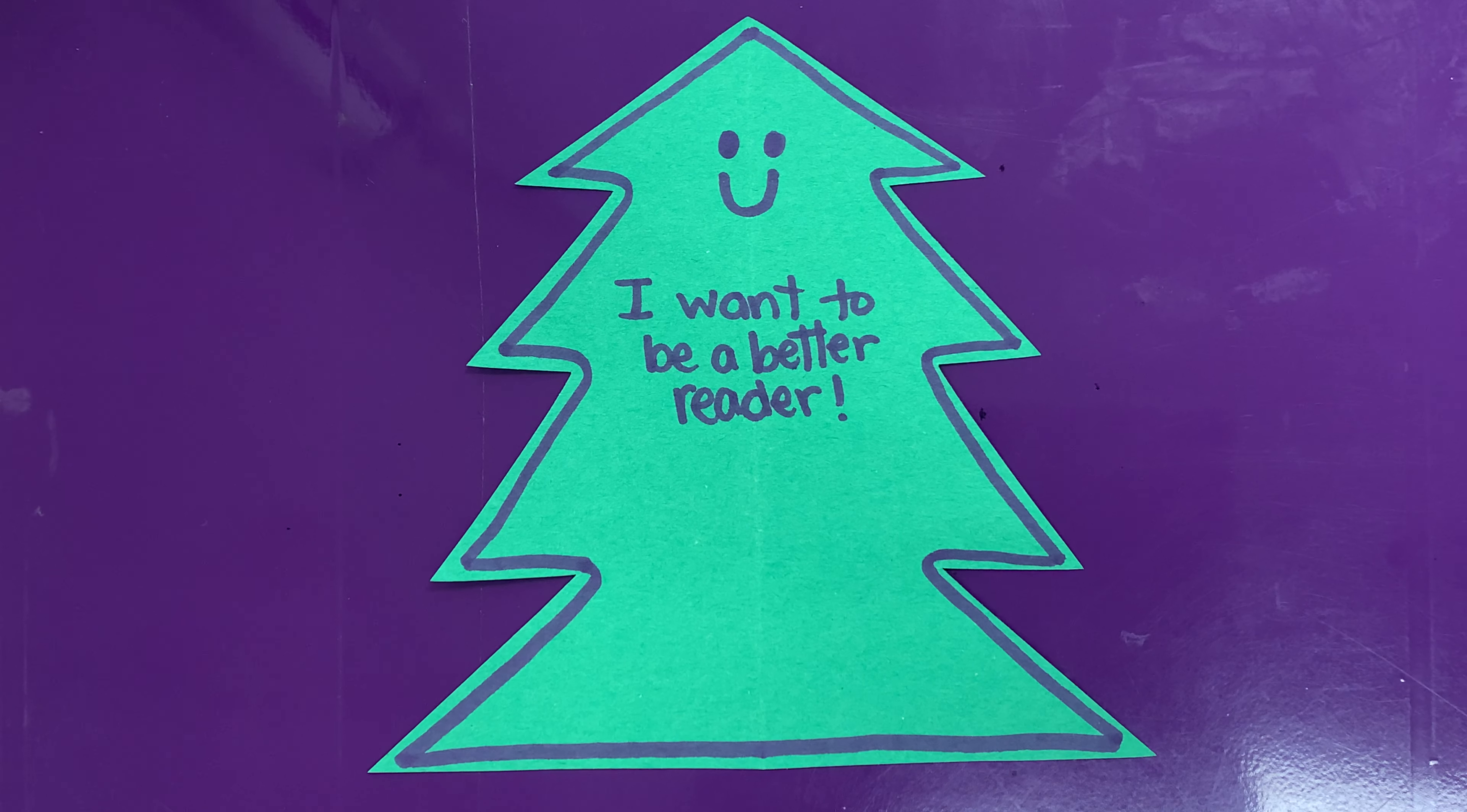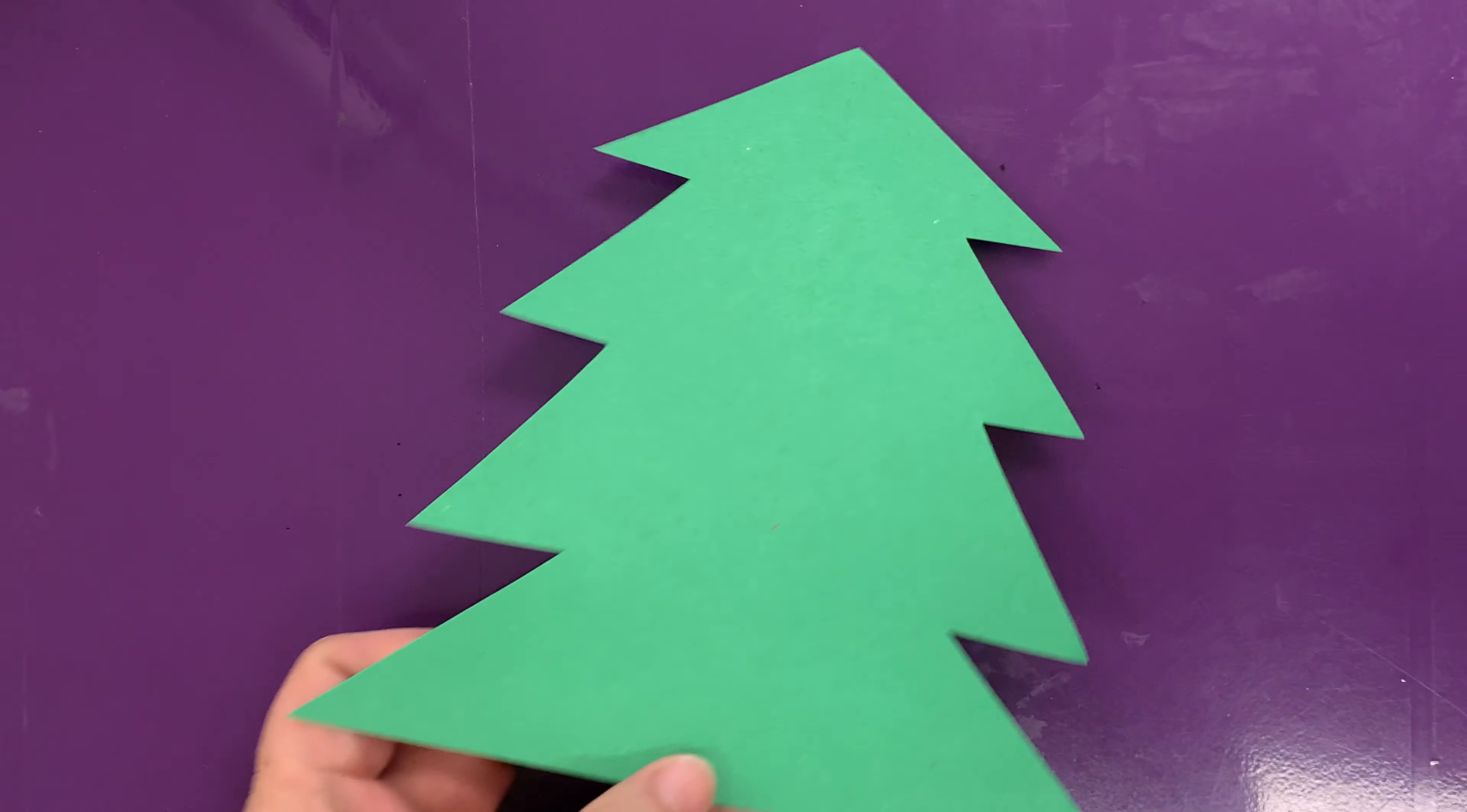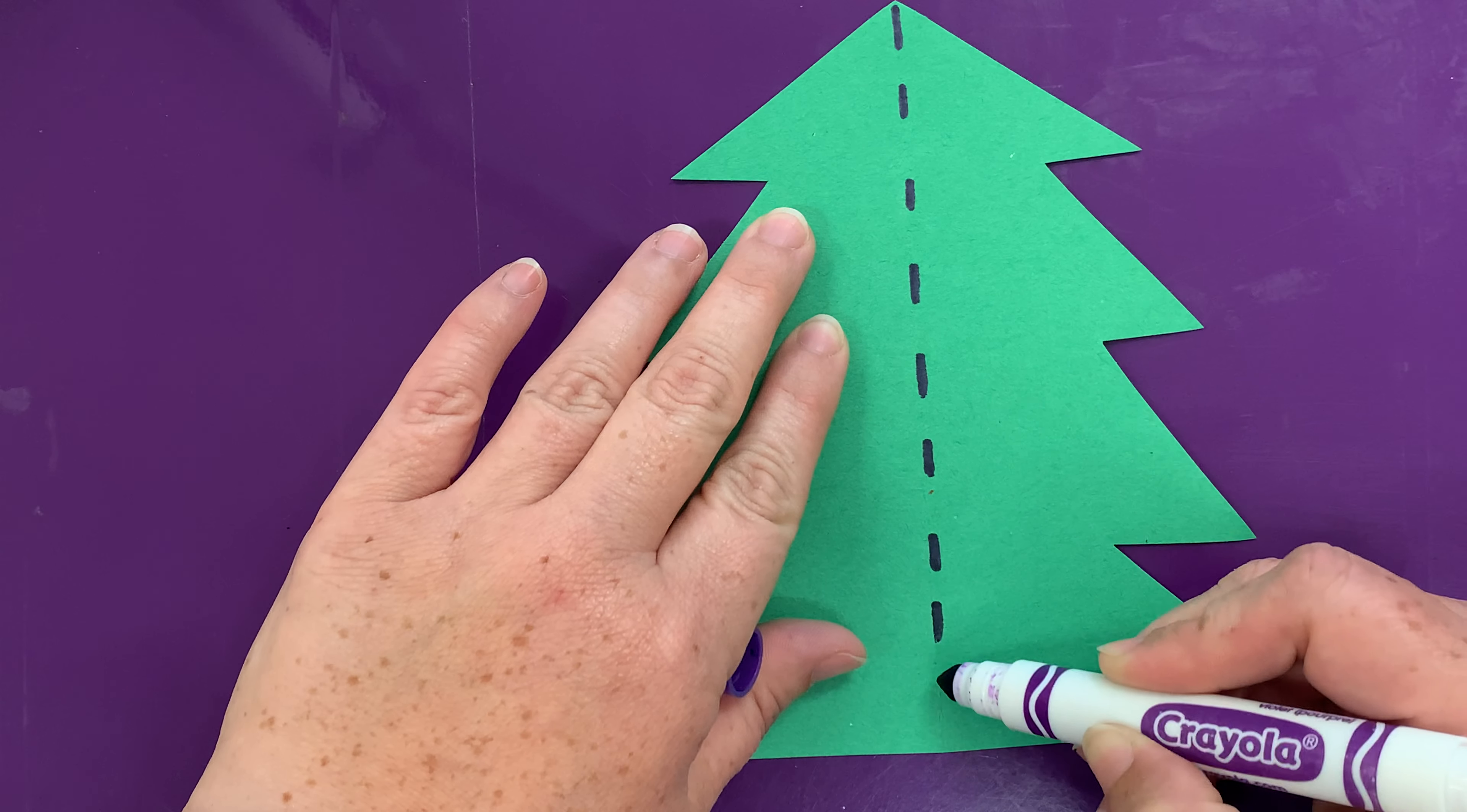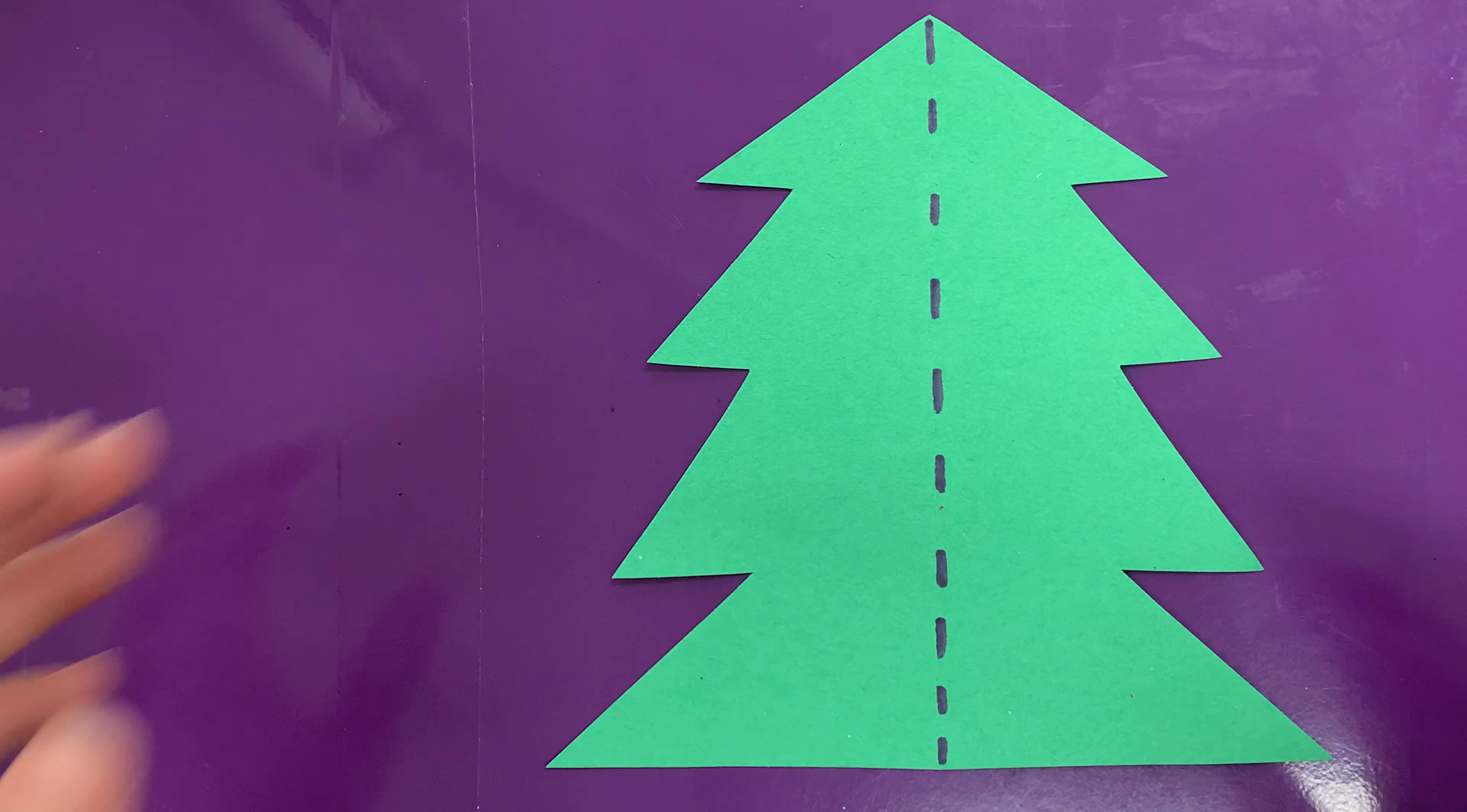We're gonna use something called the line of symmetry. Symmetry, get it? It's tree to make our tree. The line of symmetry is an invisible line that divides something right down the middle. And when you have an object with a line of symmetry, the left side and the right side are identical. They match.